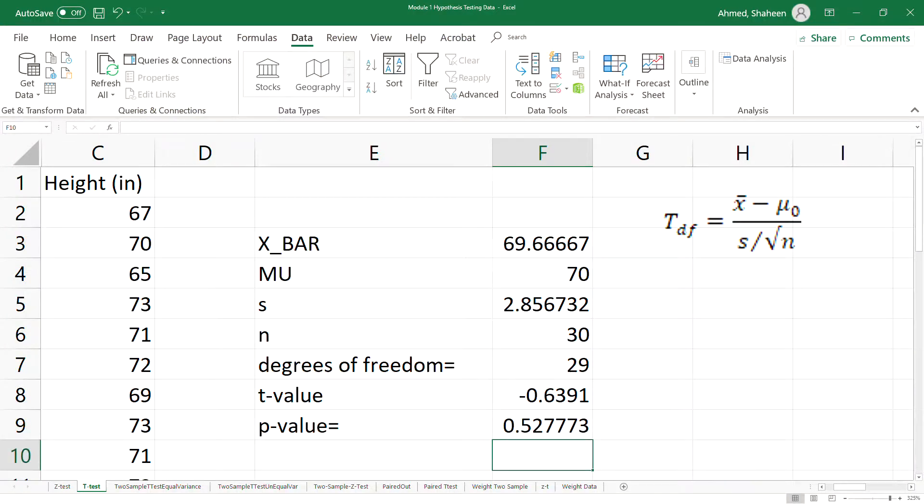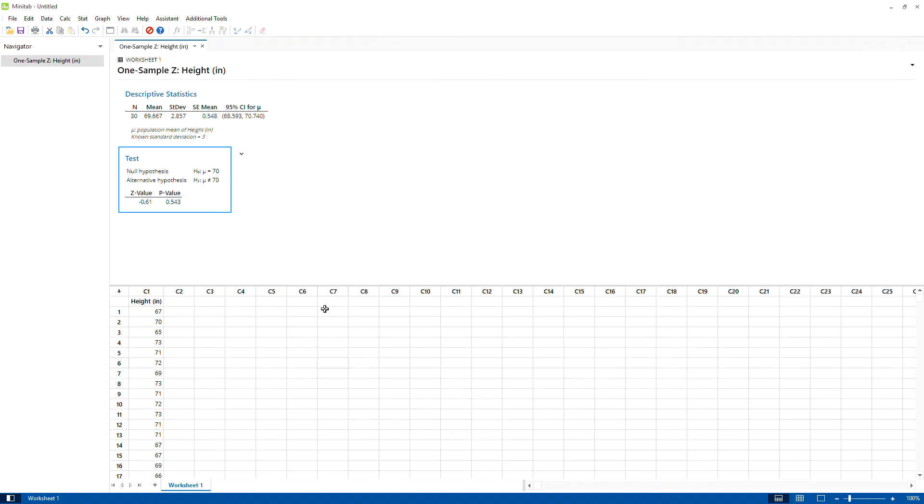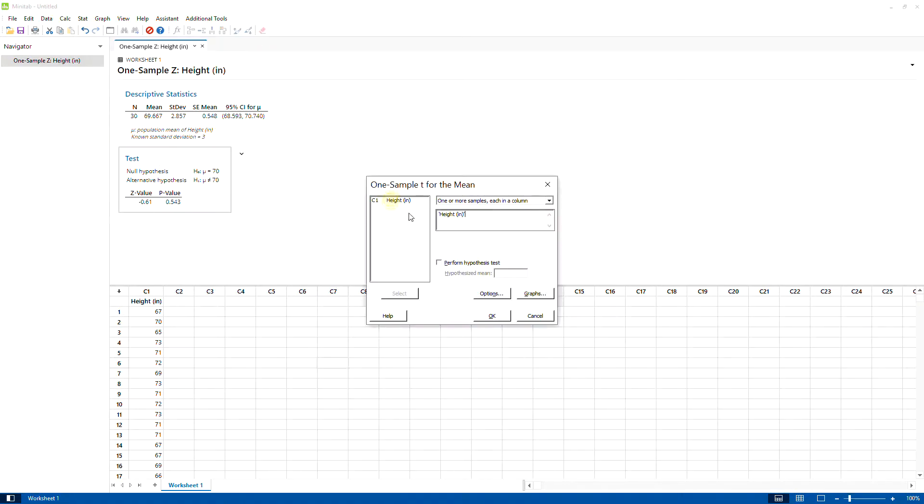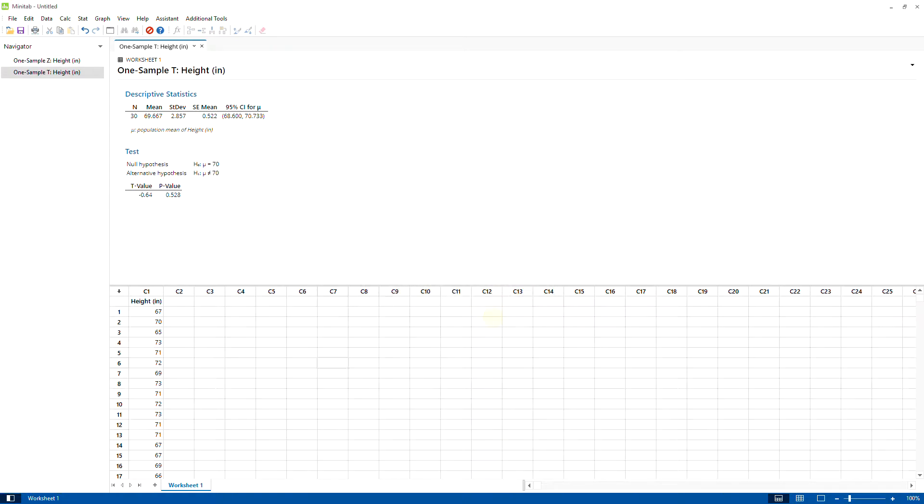Go to Stat, 1-Sample T, select the data, perform hypothesis on 70 inches, close it. That's the calculated value from Minitab - same value, 0.528 probability value.